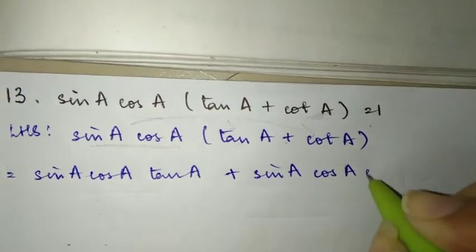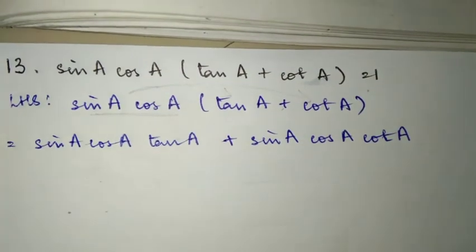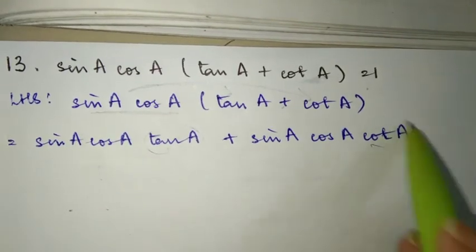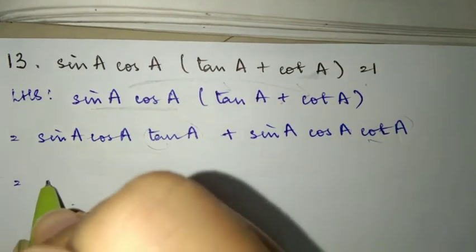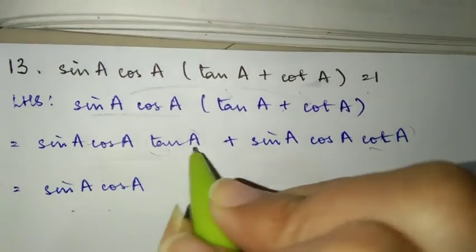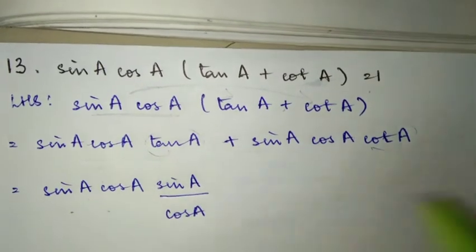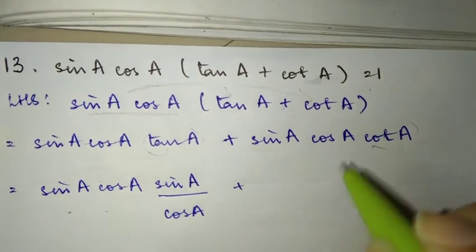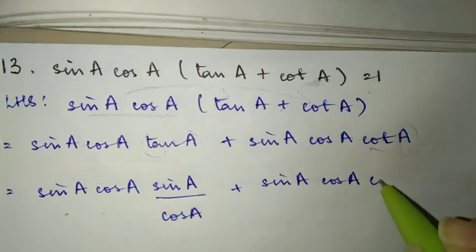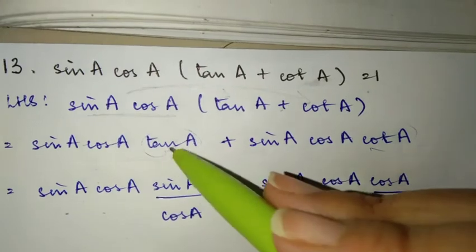Personally I prefer this method — you can choose whichever you like. Now let's substitute the formulas for tan and cot. Tan A equals sin A by cos A, so we substitute that. Then cot A equals cos A by sin A, and we substitute that too.